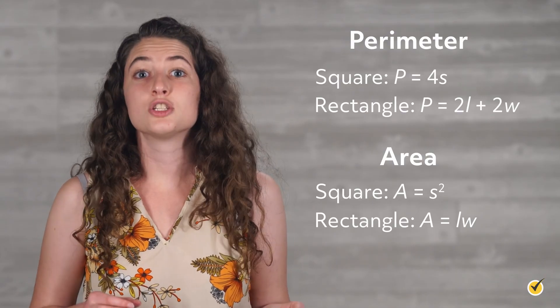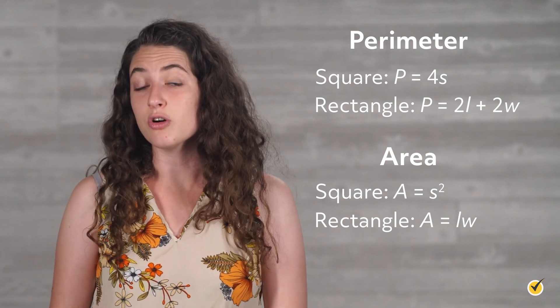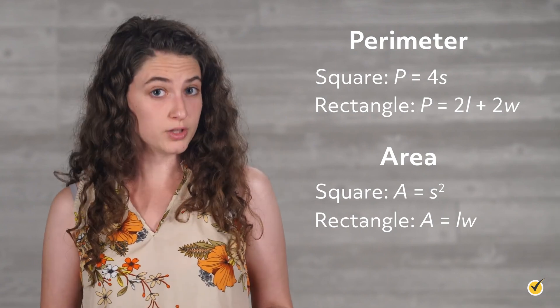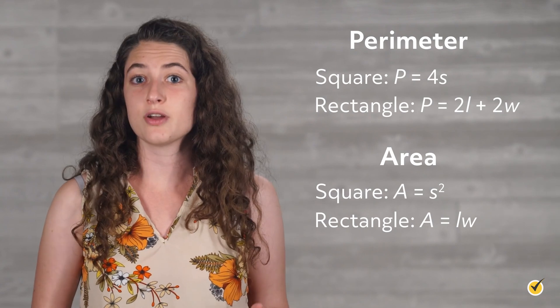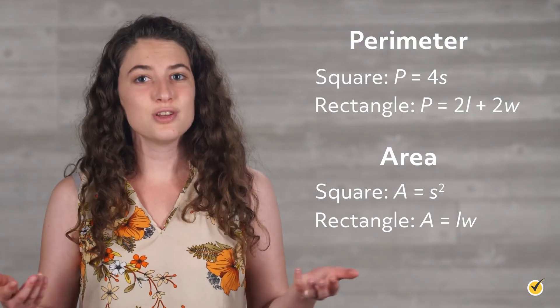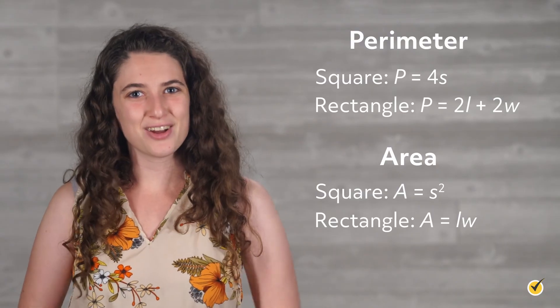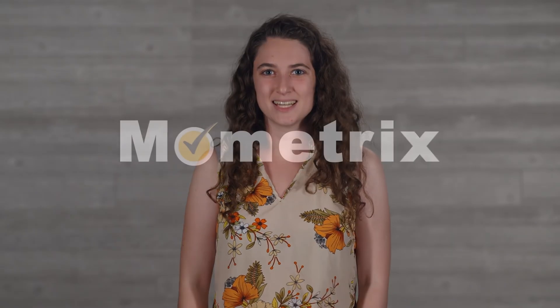Remember, a square is a special type of rectangle, so if you are only able to remember your formulas for the area and perimeter of a rectangle, you can use those to find the area and perimeter of a square. I hope that this video was helpful. Thanks for watching and happy studying!